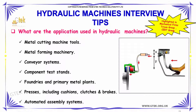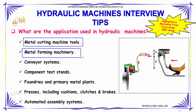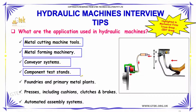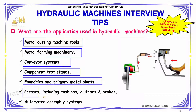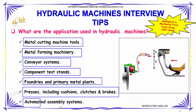What are the applications used in hydraulic machines? The applications include metal cutting machine tools, metal forming machinery, conveyor systems, component test stands, foundries and primary metal plants, presses including cushions, clutches and brakes, and automated assembly systems.